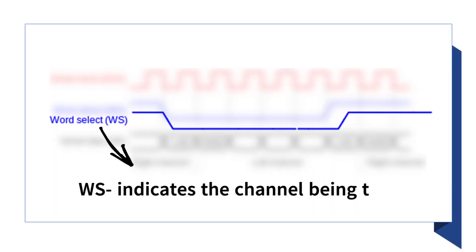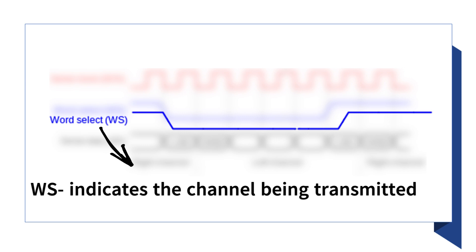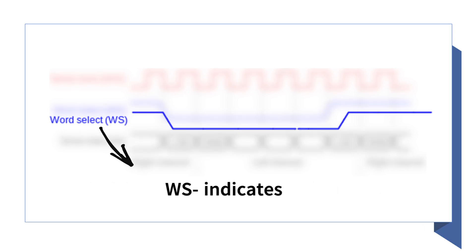WS, or word select, marks the beginning of each audio word, indicating whether it's left or right channel data.